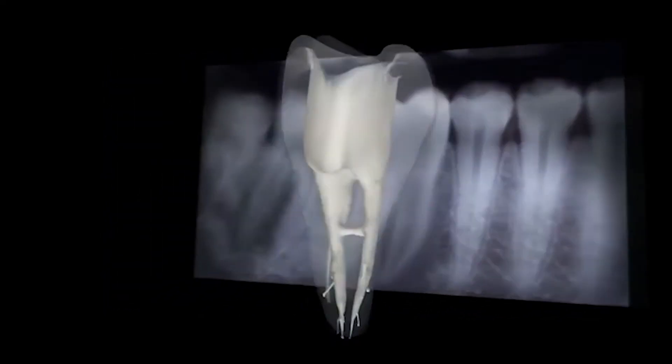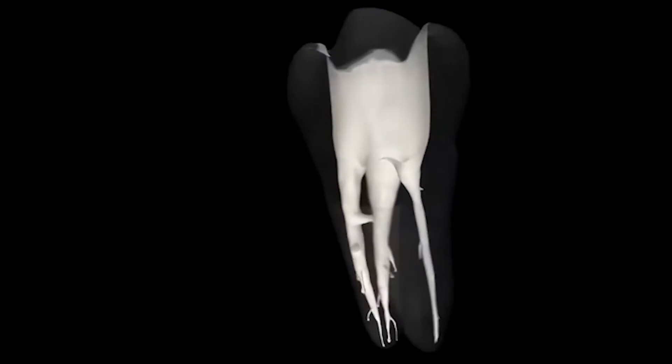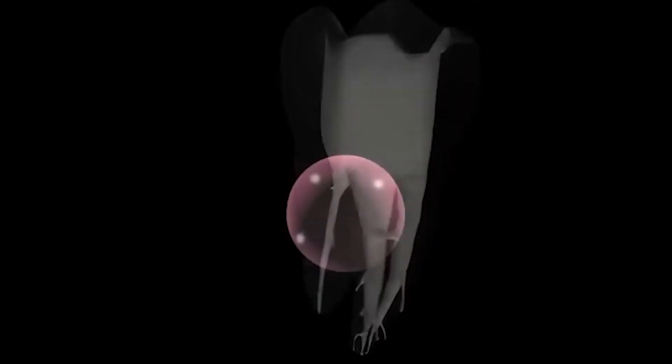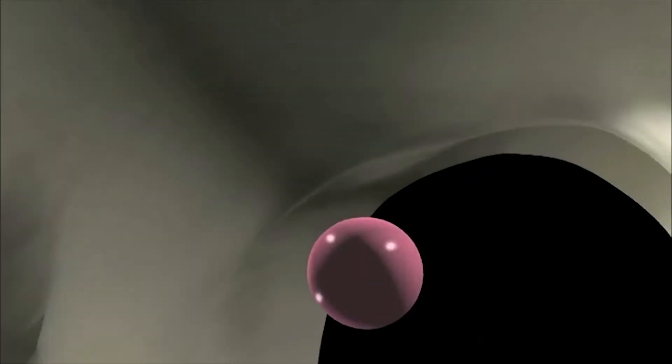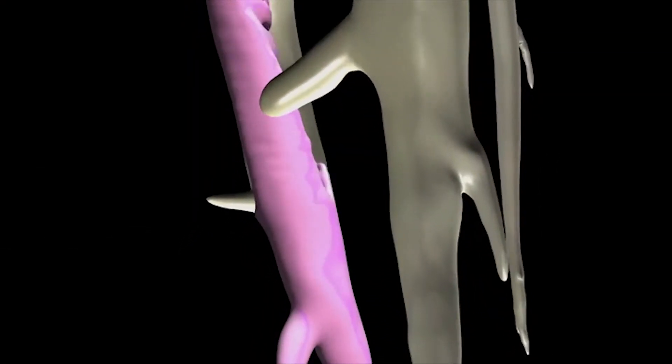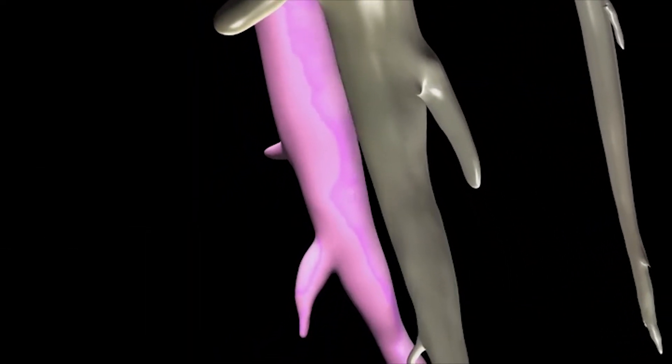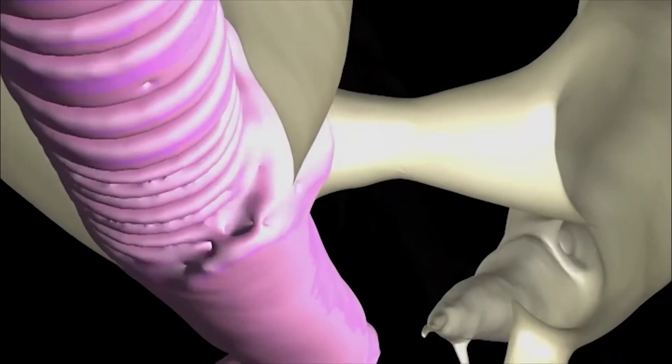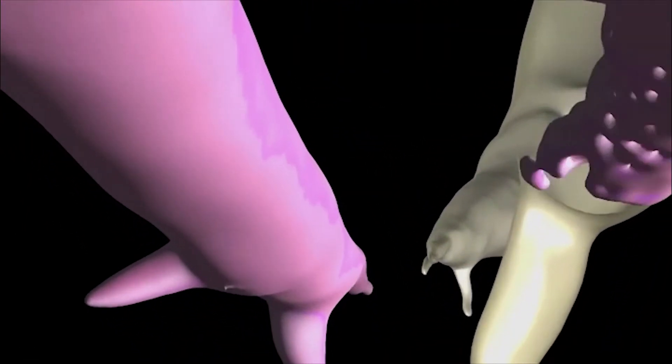Place Guttapercha Core into the root canal system in one smooth motion without excessive force. The cross-linked Guttapercha Core centrally compacts the alpha-phase Guttapercha with a hydraulic force that sends it flowing in three dimensions into laterals, isthmuses, and accessory canals.